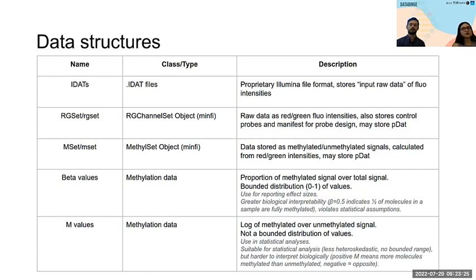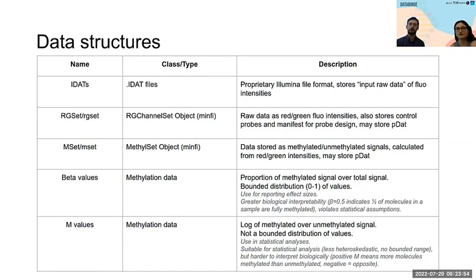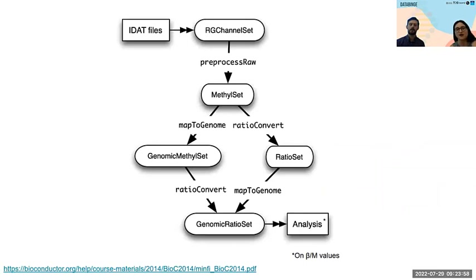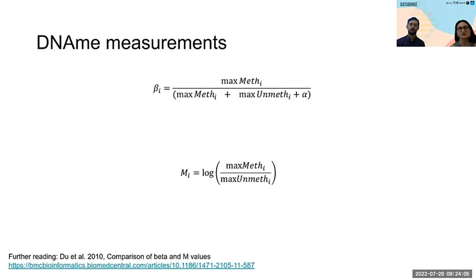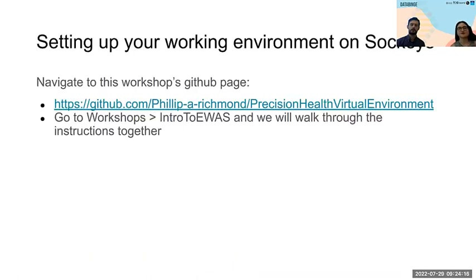From the methyl set you can calculate a beta value — the proportion of methylated signal over total signal — or an M value, which is the log of the ratio of methylated over unmethylated. Typically it's better to use M values for statistical analyses, and effect sizes are often reported in beta values. You can convert freely between the two — if you have a result derived using M values, you can always convert it back to beta to plot it.